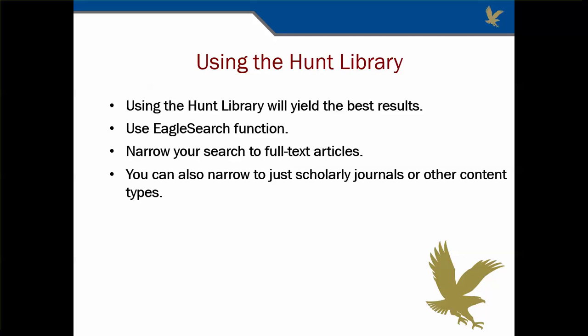Using the Hunt Library to search for your evidence will yield the best results. Remember that you can now search using Eagle Search directly from the Hunt Library's main page. Once you have your initial search results, you can specify full text articles only if you wish. You can also specify content type — journal articles only, for example. This feature can be very useful in helping you meet the source type requirements for your assignment.